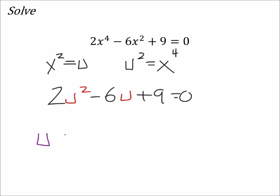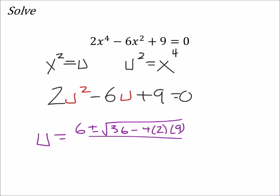So, we see that u is, well, the negative of negative 6 is 6 plus or minus the square root of negative 6 squared is 36 minus 4 times a times c. That's nice. And all over 2a.